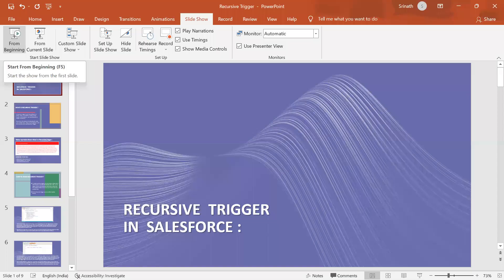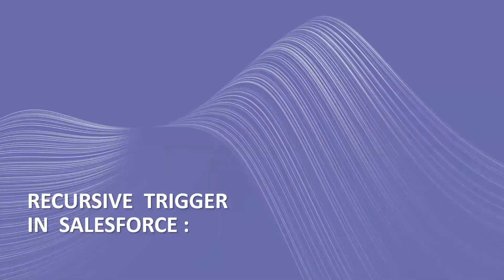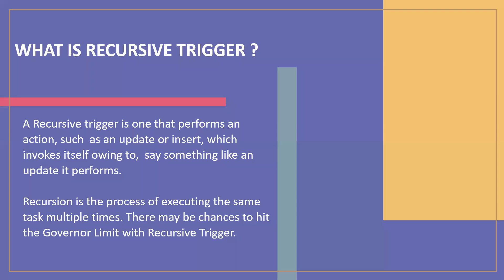We can see recursive triggers in Salesforce. First of all, what is a recursive trigger? A recursive trigger is one that performs an action such as an update or insert which invokes itself. Simply we can say it is a process of executing the same task multiple times. There may be chances to hit governor limits with a recursive trigger.